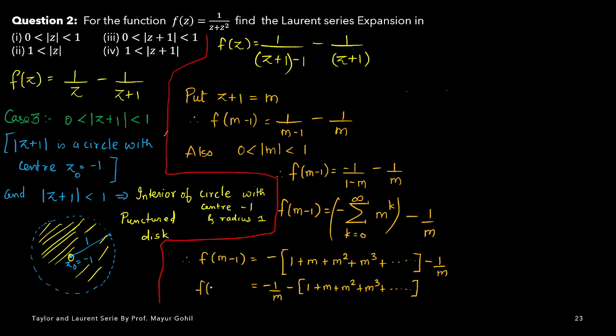Now we did f(m minus 1). What we need to do next is resubstitute back. Our question was in terms of z, so we should write everything in terms of z only. Wherever you see m, resubstitute m as z+1. Therefore f(z) equals minus 1 upon (z+1) minus [1 plus (z+1) plus (z+1) squared plus (z+1) cubed and so on]. This is the final answer for the Laurent expansion of this case.